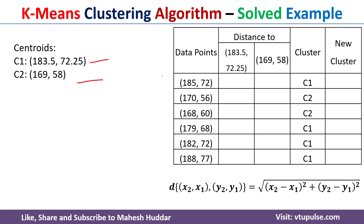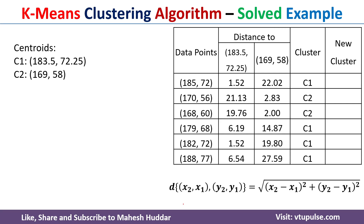Once we calculate the new centroids, we calculate the distance from each data point to the new centroids using the Euclidean distance formula and then reassign data points to clusters. For example, between distances 1.52 and 22.02, the minimum is 1.52, so we assign that data point to C1. Between 21.13 and 2.83, the minimum is 2.83, so we assign to C2. We similarly assign all remaining data points.